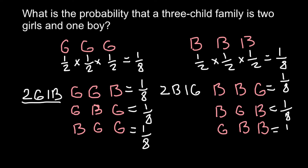Now, to give a final answer: our question asks for the probability that a three-child family has two girls and one boy. As we can see, there are three such variants. We have to use the sum rule — we add the probability of each variant together. The answer is: the probability of having two girls and one boy is 3/8.